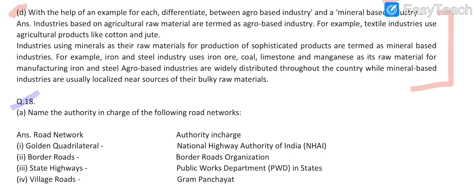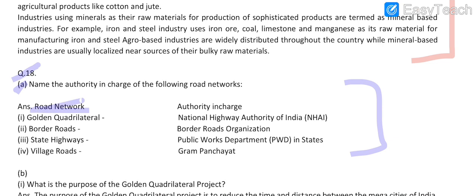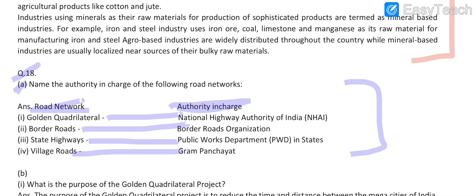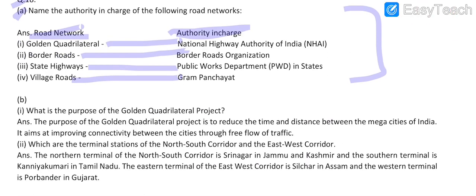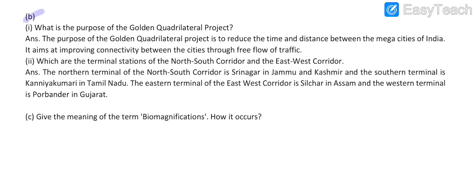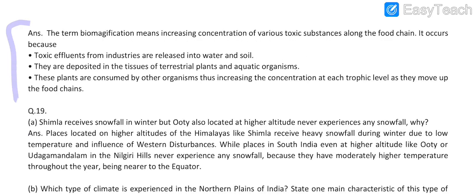Question number 18: Part A — the heading is 'Road Network and Authority in Charge.' Under this: Golden Quadrilateral answer is this, Border Road answer is this, State Highways answer is this, Village Road answer is this. Part B (first and second parts) — answers are here. Part C — Biometric Fiction — answer is this.